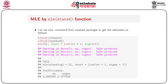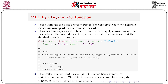Now use `mle` from the stats4 package to get the estimates. First load `library(stats4)` — you may also need to load `methods`, though it should be automatically loaded. Then call `mle(ll, start = list(mu = 1, sigma = 1))`. You will get a warning about NAs produced, but the results give coefficients mu = 2.99 and sigma = 2.27.